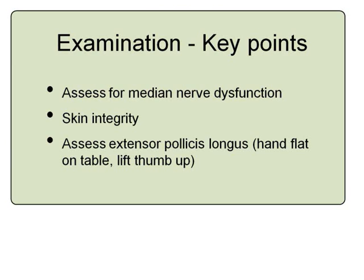The other key element of the examination is the function of the extensor pollicis longus, purely because surprisingly, in relatively undisplaced fractures, this can rupture during the treatment. One needs to know whether it's functioning initially and then certainly on every review in fracture clinic it needs to be assessed. So those are the two key things, as well as ensuring it's not an open injury, as particularly in older patients the ulnar side of the fracture can come through the wrist, commonly on the palmar side.